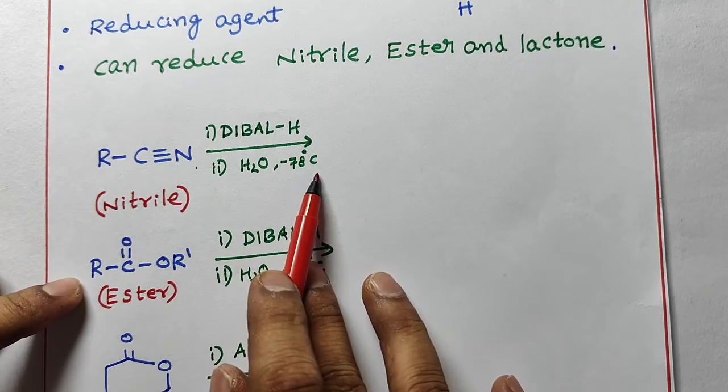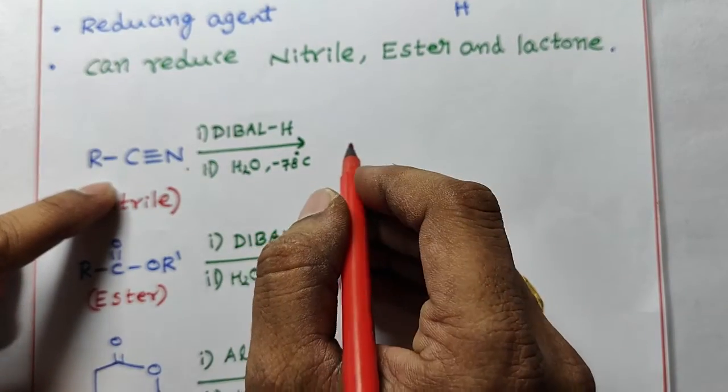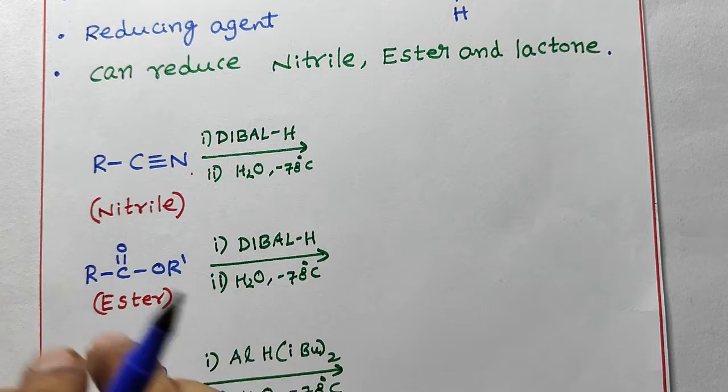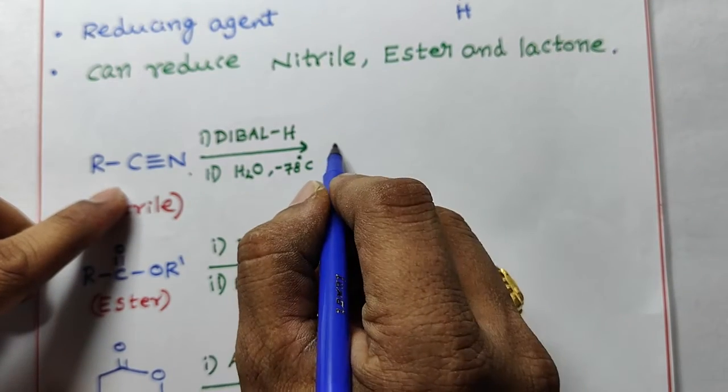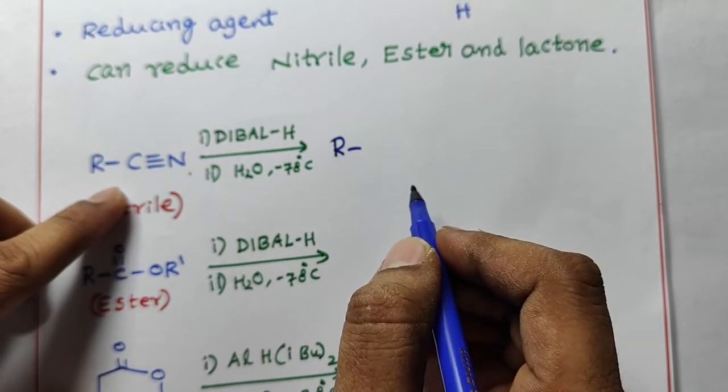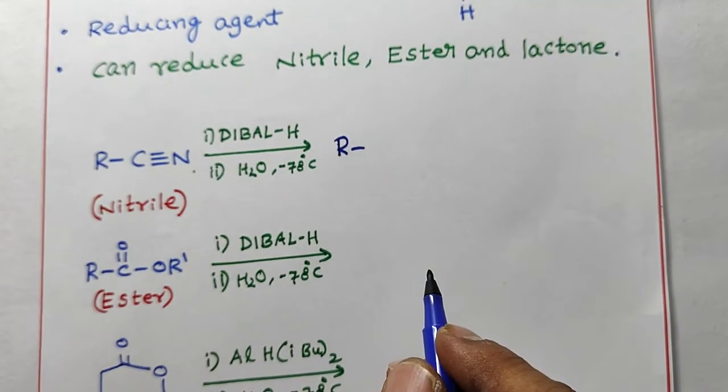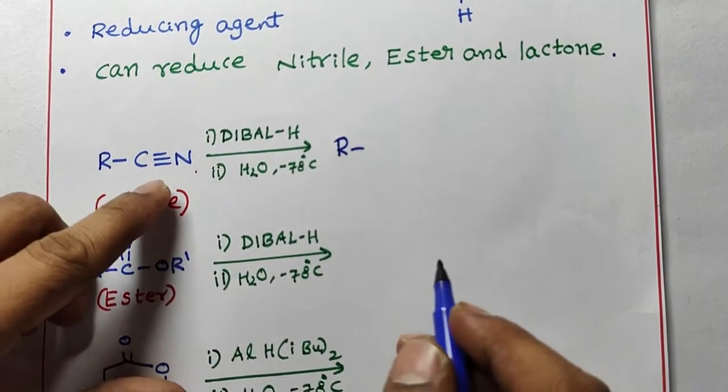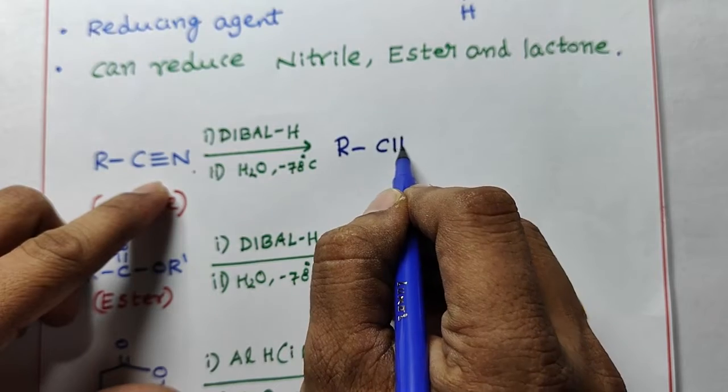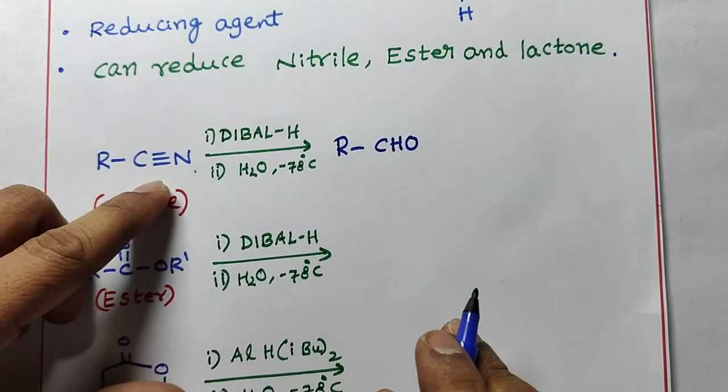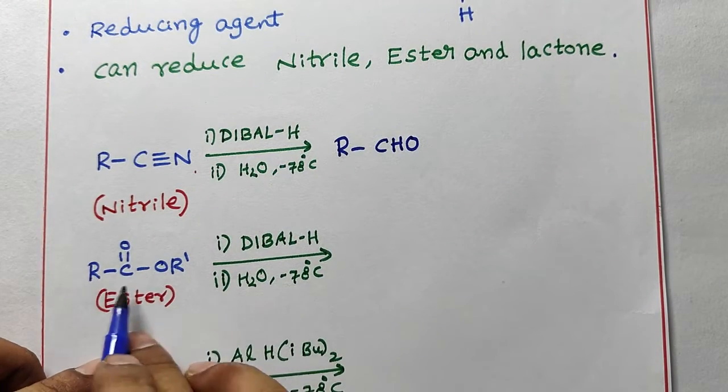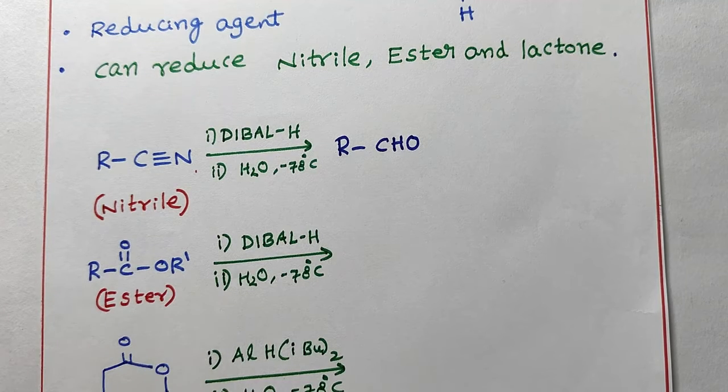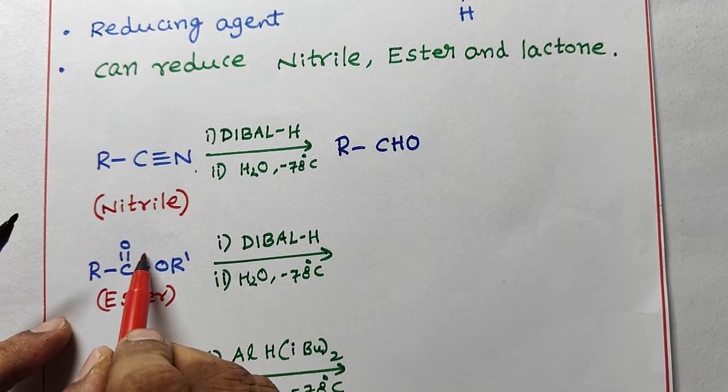First, nitrile or cyanide. So DIBAL-H, if you maintain low temperature, in this case CN is converted into CHO aldehyde. And second, ester - it's easy. We can remember: see here, first break the bond here, left side one hydrogen, right side one hydrogen you can write it.